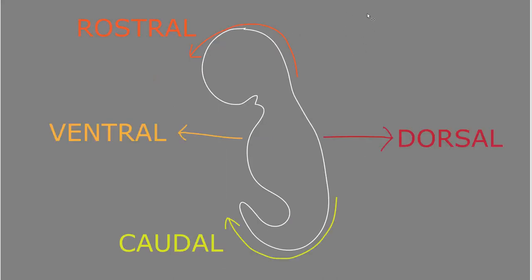Now, if we stop talking about rats and start talking about humans instead, we use all the standard anatomic orientation terms we just discussed for the embryonic human during the first few weeks of development in the uterus when there's still a tail-like structure. Here we're looking from the side at a human embryo, and the term rostral refers toward where the nose is going to be, caudal toward the end of the tail, and ventral and dorsal are the same — ventral toward the front and dorsal toward the back.